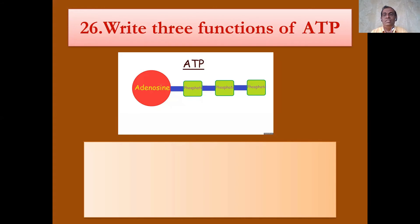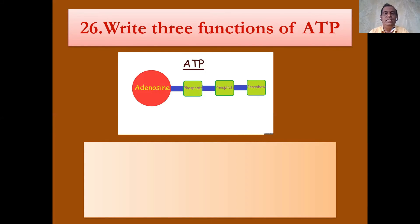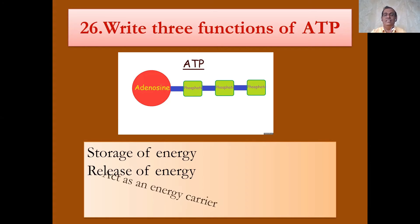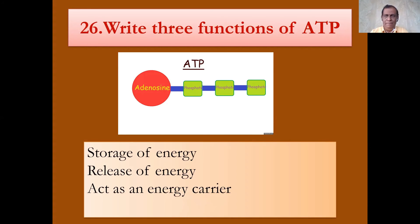ATP — adenosine triphosphate — is a very important molecule found in all cells. Tri means three phosphate groups. In between these phosphate molecules, energy is trapped in the form of chemical energy. The respiration takes place in the mitochondria and those energies are stored in the ATP. ATP acts as a source of energy, releasing energy when required, and also acts as an energy carrier. These three functions are very important for ATP.